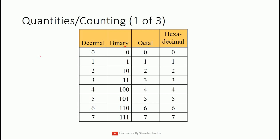Let me tell you what the 8421 method is. The formula for that is 2 raised to the power of n. Starting from 2 raised to power of 0, which is 1; 2 raised to power of 1, which is 2; 2 raised to power of 2, which is 4; and 2 raised to power of 3, which is 8. Similarly, you can add on the remaining values as per the availability.